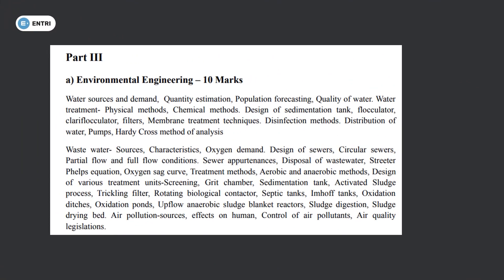The next section is Environmental Engineering, worth 10 marks each part. First: Water Supply — water sources (surface source, subsurface source), demand, quantity estimation, population forecasting. Quality of water: physical, chemical, and biological parameters. Treatment: sedimentation tank, flocculator, clarifier-flocculator, filters, membrane treatment techniques, reverse osmosis. Disinfection methods. Distribution: pump, Hardy Cross method, pipe network analysis.